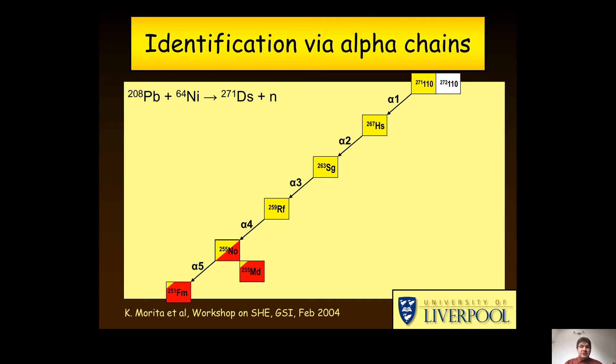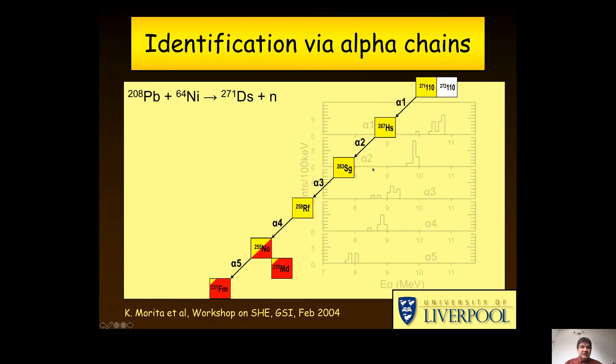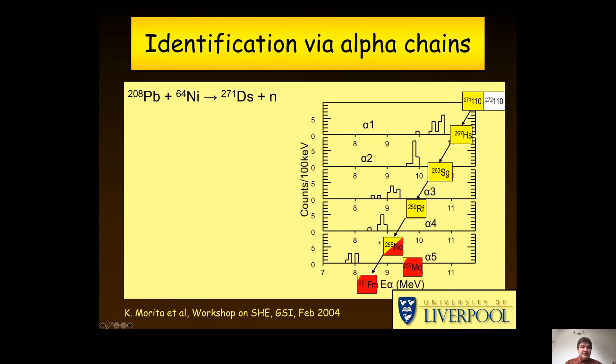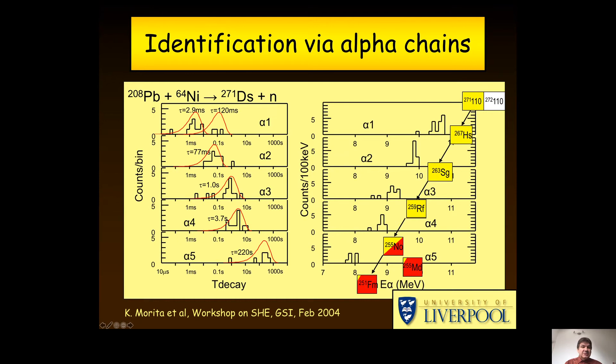then the granddaughter and so on. In this case, we see five separate alpha decays in each chain, one after the other. Each one with a characteristic energy, shown here on the right, and a characteristic time, shown here on the left. Now I know from previous experiments the last two steps in the chain.